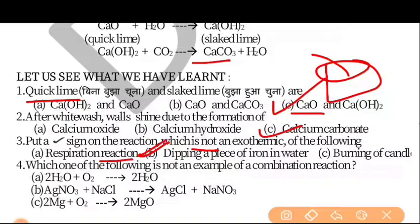The fourth question asks: which of the following is NOT an example of a Combination Reaction? Option A: H2 plus O2 gives 2H2O — this is a Combination Reaction. Option B: Silver nitrate (AgNO3) reacts with sodium chloride to give sodium nitrate — this is not a Combination Reaction, it is a displacement reaction. So option B is not a Combination Reaction. The correct answer is B.